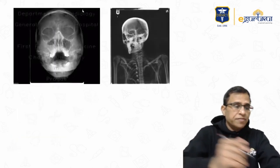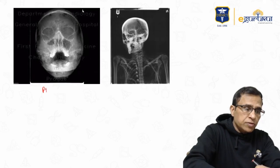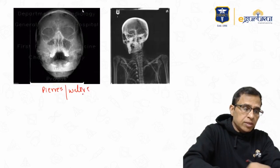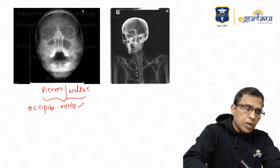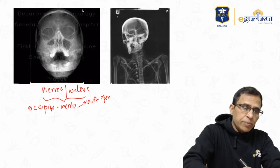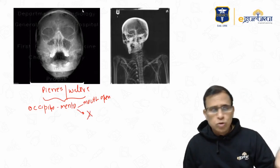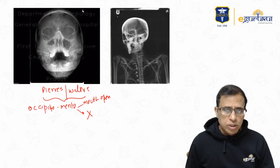Now, Peer-raise view and Water's view are very similar — they are both occipitomental views. If the mouth is open, then it becomes Peer-raise view. If the mouth is not mentioned — whether open or closed — then it's Water's view.